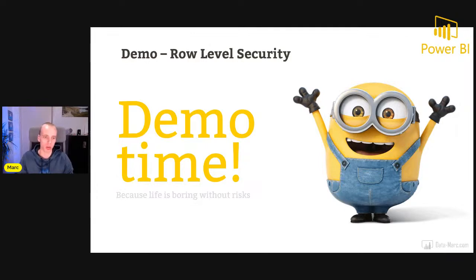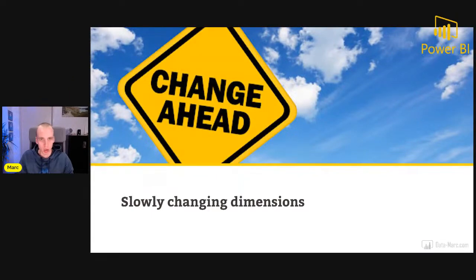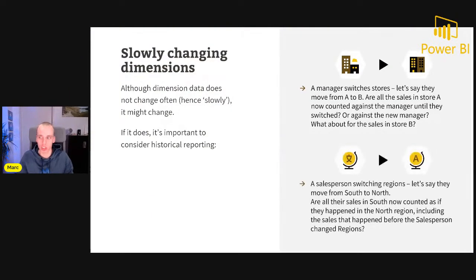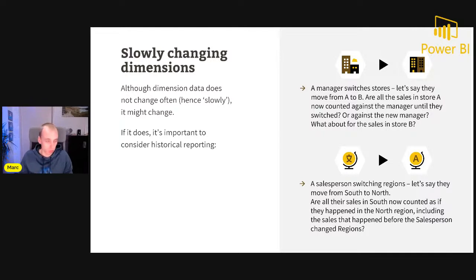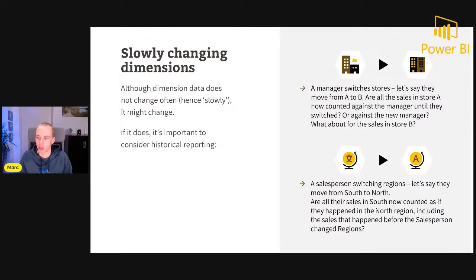The next topic I want to tell you more about is slowly changing dimensions. Slowly changing dimensions are values in dimensional tables that change over time. Although dimension data does not change often, it might. And if it does, it's important to think about how you handle historical data. For example: a manager switches stores, moving from store A to store B — are all related sales in store A counted against the manager until they switched, or do the sales metrics move with them?